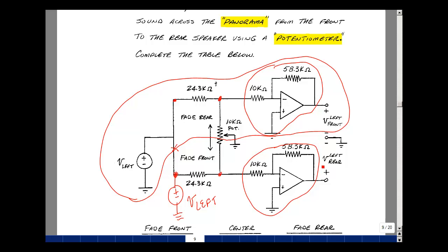And then we also have a similar circuit on the bottom. So I've got my V-left coming in through a 24.3k through the pot back to ground. In my first analysis, let's put the pot all the way to the bottom to the fade front position. We'll do the center, and then we'll do a fade rear. And the equivalent circuit is shown on the next page.